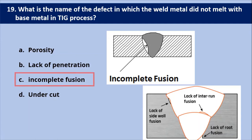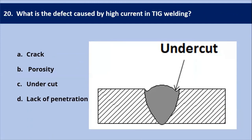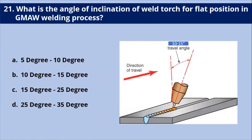Next question: what defect occurs at the base metal when there is high current in TIG welding? Too high current in TIG welding causes undercut, which results in a weakened weld and work piece. It also reduces the cross-sectional thickness of the base metal. This welding imperfection — groove formation at the base of the weld — is called undercut.